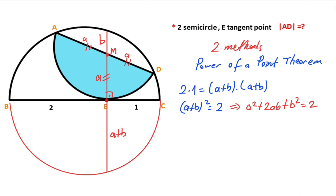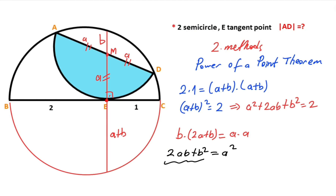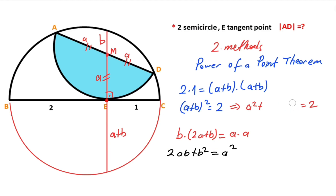Now if we apply the Power of a Point theorem for point M: b times 2a plus b must equal a squared. This means 2ab plus b squared equals a squared. Notice that a squared equals 2ab plus b squared, so we can substitute a squared in place of 2ab plus b squared in the earlier equation. That means 2a squared equals 2, so a squared equals 1.